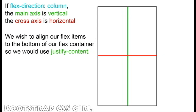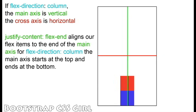Our FlexDirection is set to Column, and we would like to align our FlexItems to the bottom of our container, so we will use the JustifyContent property. To align our FlexItems to the bottom, we set JustifyContent to FlexEnd. This moves our FlexItems to the end of our main axis. With FlexDirection set to Column, the main axis starts at the top and ends at the bottom.